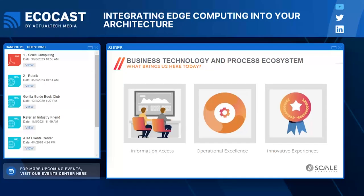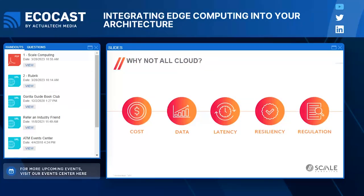Why not all cloud? Cloud can provide instant scalability and the ability to rapidly deploy new applications. But there are constraints. One is cost — when you're dealing with applications that involve large amounts of data, we're seeing rapid growth in computer vision, video surveillance, and analytics that require processing very large data streams. Sending all that raw data to the cloud for facial recognition analysis and then receiving responses back costs a lot of money and introduces latency.